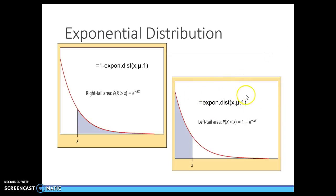this is your equation. And this equation is assuming that you are interested in up to whatever x you are considering. If we want the other side, we have to do 1 minus the expon.dist, which is exactly the same as the normal distribution in Excel.